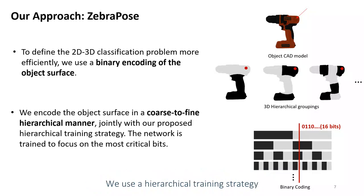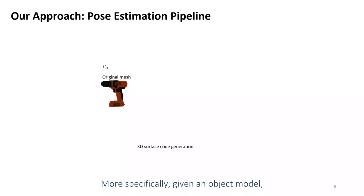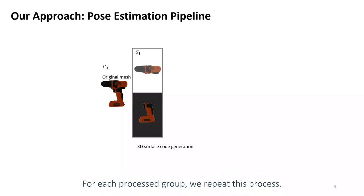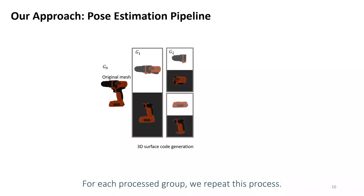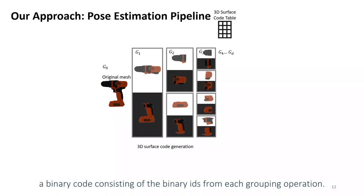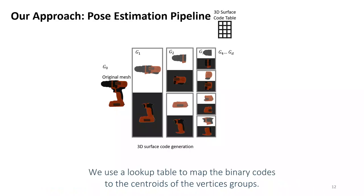We use a hierarchical training strategy to train the network to focus on the most critical bits. More specifically, given an object model, we group each 3D vertex into two groups and assign a binary ID for each group. For each successive group, we repeat this process. Finally, each vertex is assigned a binary code consisting of the binary IDs from each group in sequence.